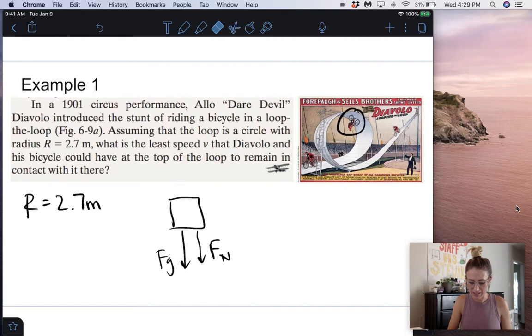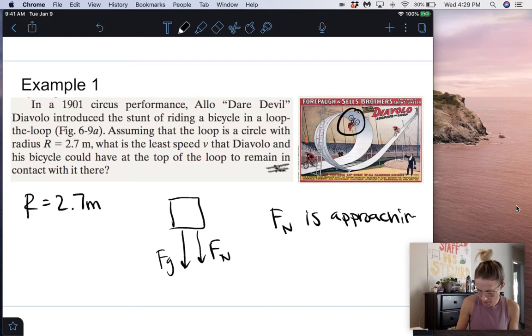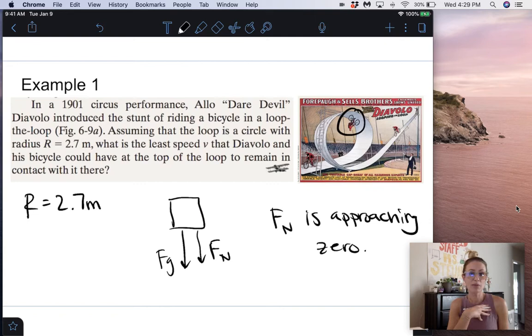So we want to know what the least speed V is that he can go to remain in contact with it there. So problems like this, and we've kind of talked about this before, when they're like, it's almost not in contact with the road anymore, what it means by that is that the normal force is approaching zero. So because of this, we're just going to plug in zero for the normal force, and then we can find our answer. That's the least speed that that bicycle would have to go in order for it just to be almost coming off that ramp when we're upside down at the very top.